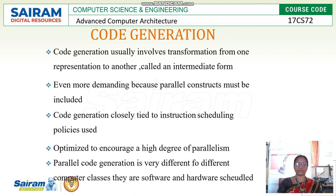The third phase is code generation, which involves transformation from high-level into intermediate-level code. It is most demanding because parallel constructs must be included in instruction scheduling policies. Parallel code generation encourages a high degree of parallelism and varies across different computer classes — software and hardware scheduled. I hope you understand this logic and I will catch you in the next video. Thank you.